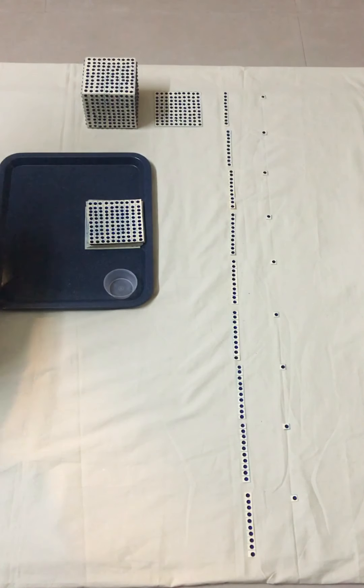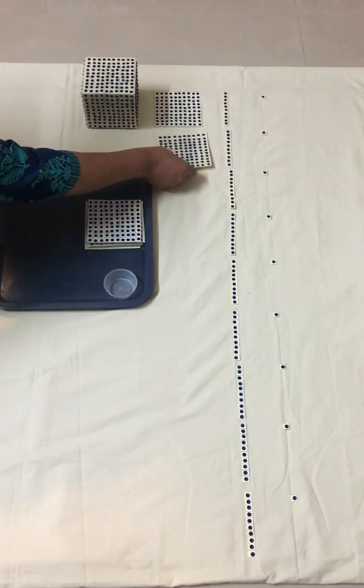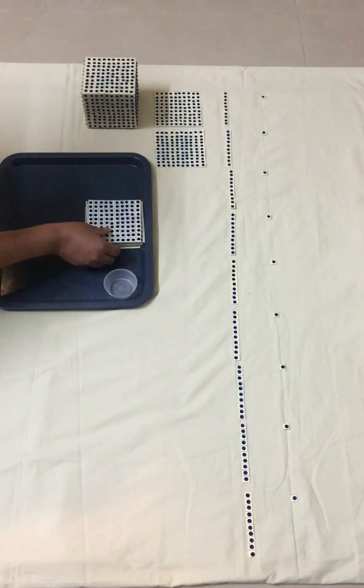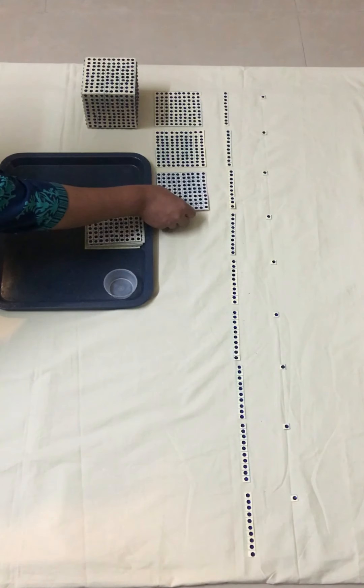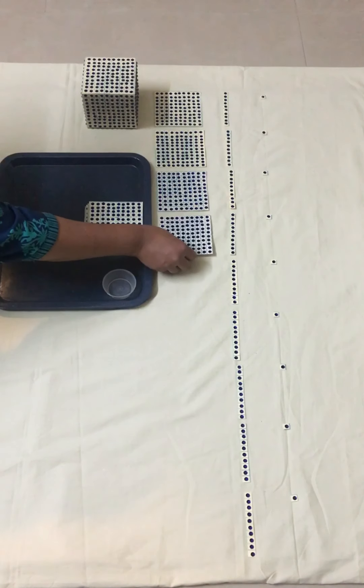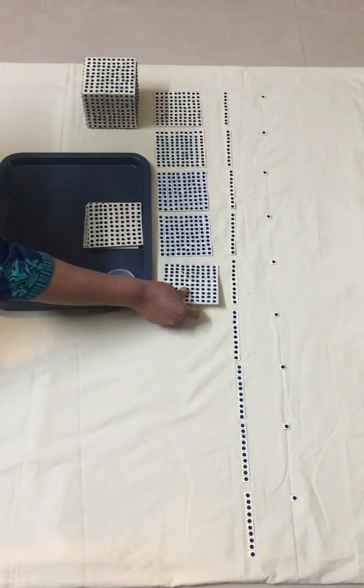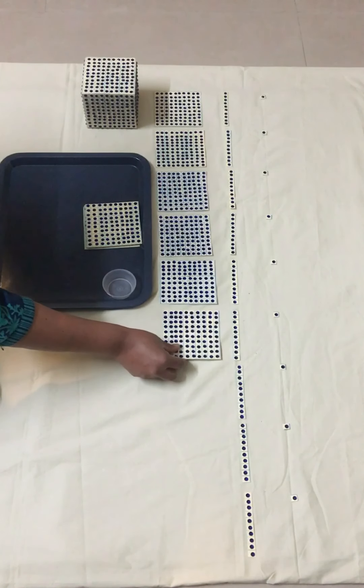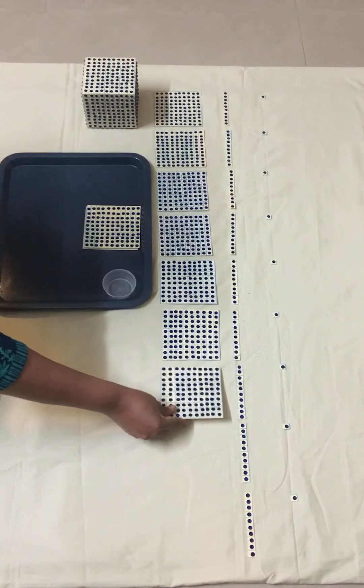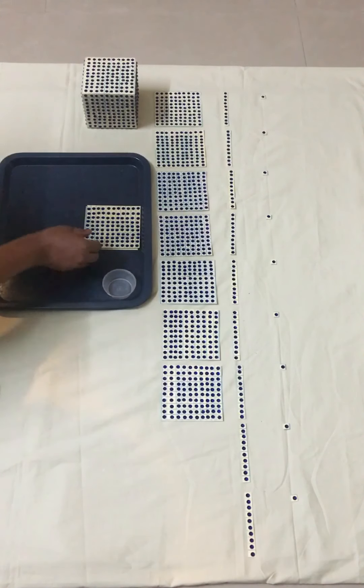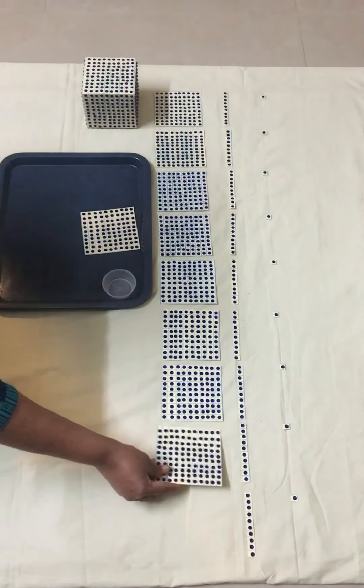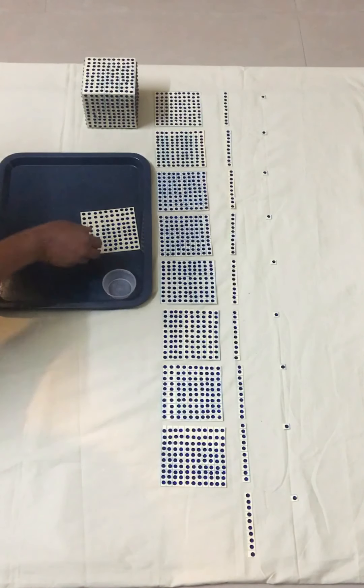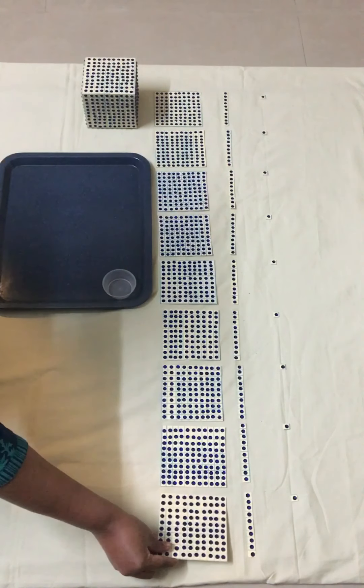Start arranging the hundreds one below the other. 2 hundreds, 3 hundreds, 4 hundreds, 5 hundreds, 6 hundreds, 7 hundreds, 8 hundreds, 9 hundreds.